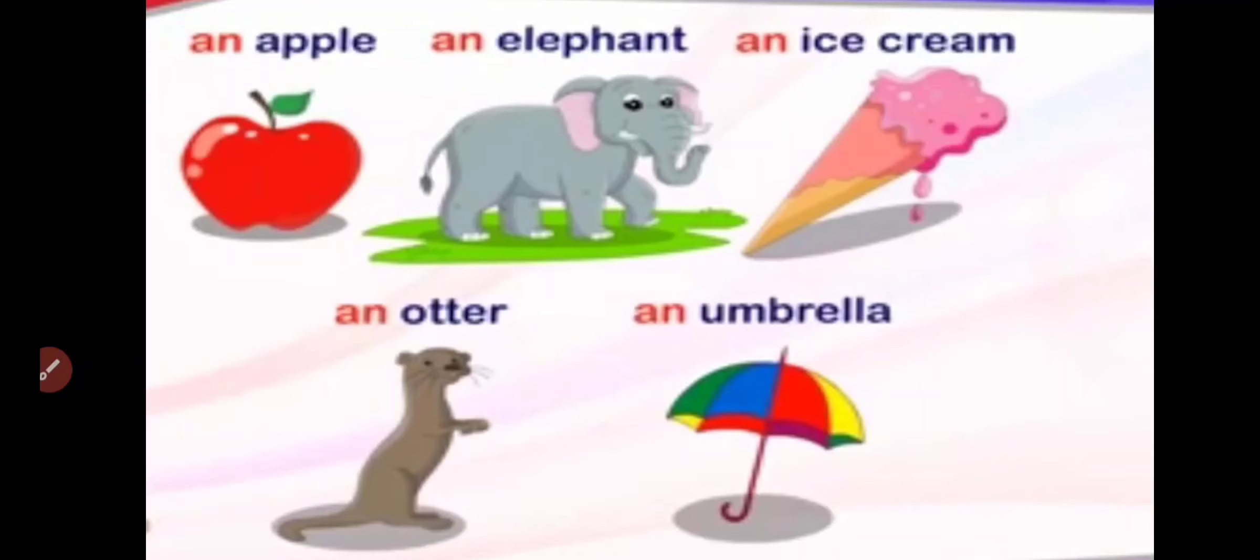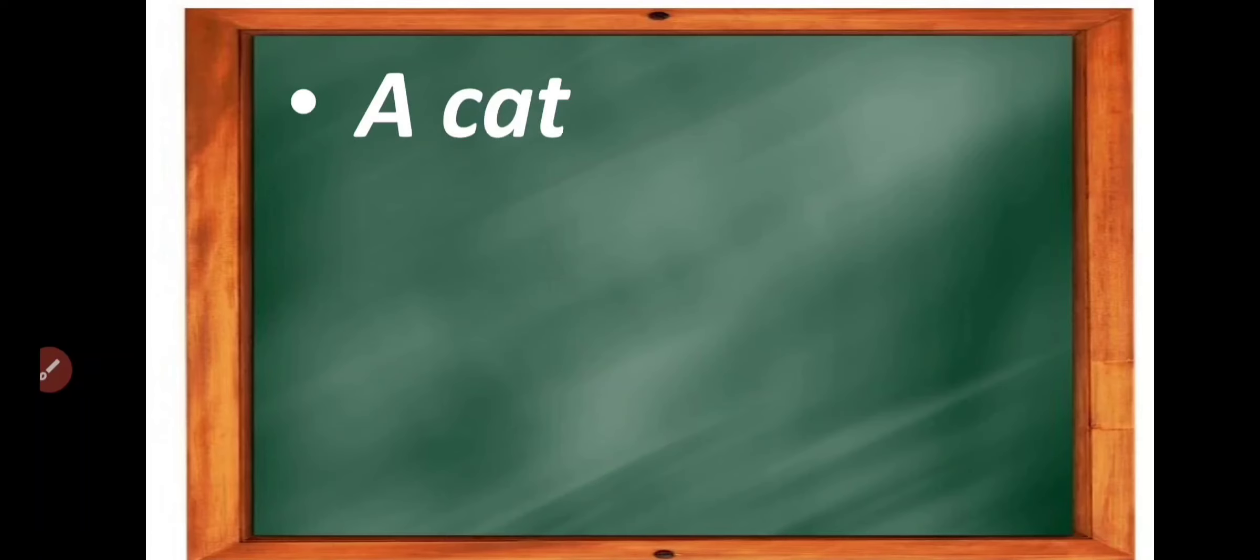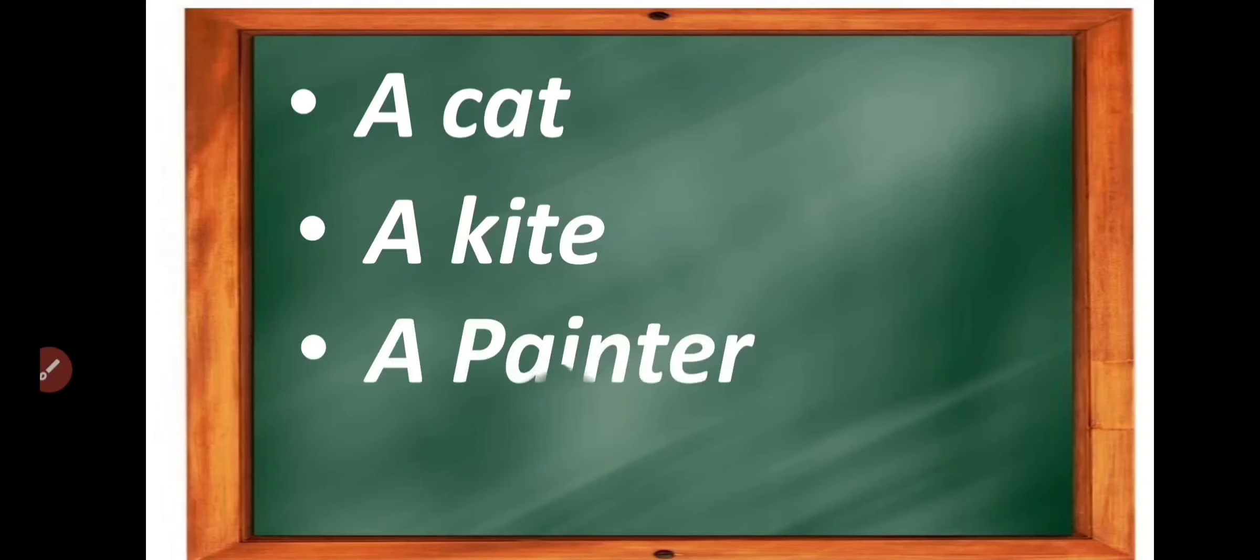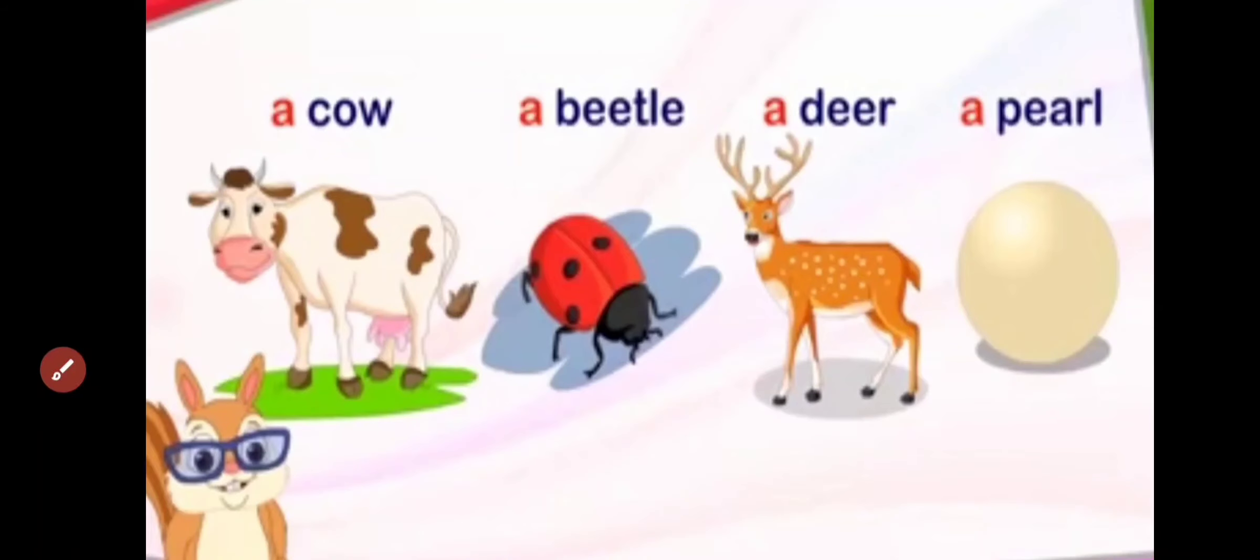More examples we have: an apple, an ice cream, an otter, and an umbrella. Next, when we have consonant sound words, then we will use a before them. Like here, a cat. Cat starts with c and c is a sound of consonant. A painter, a boat. Here we have consonant sound words like c, k, p, b. These are the consonants, so I used here a. More examples like a cow, a beetle, a deer, a pearl.